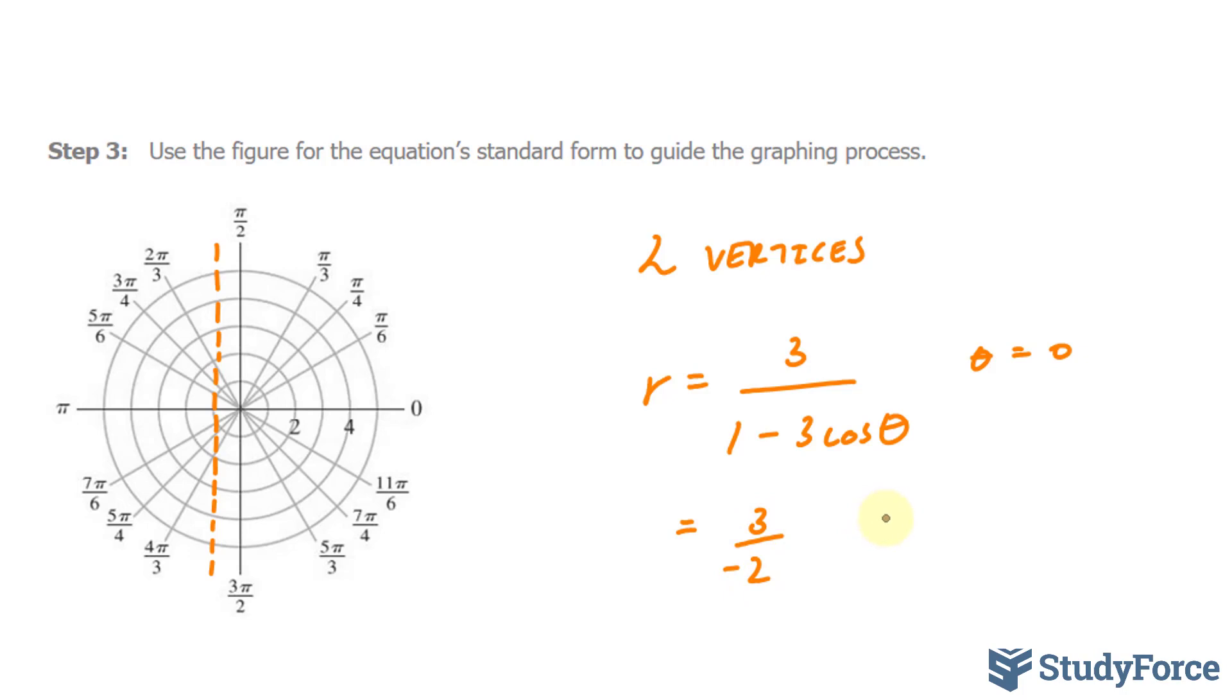So our first point, our first vertex will be at negative 3 over 2 and 0. And we can plot that right now at angle of 0, it's shooting this way. And it's shooting in the negative direction. So negative 3 over 2 is the same thing as negative 1.5. It's shooting this way. So we'll have a point right here. That's one of our vertices.